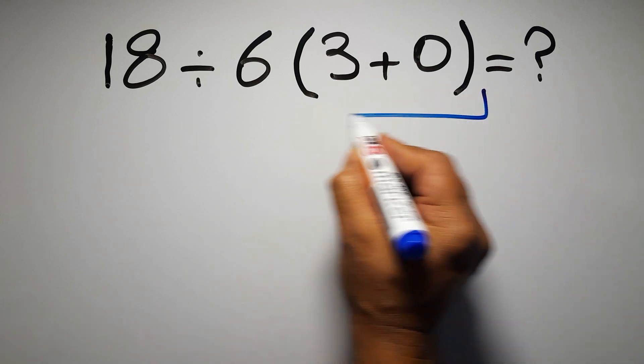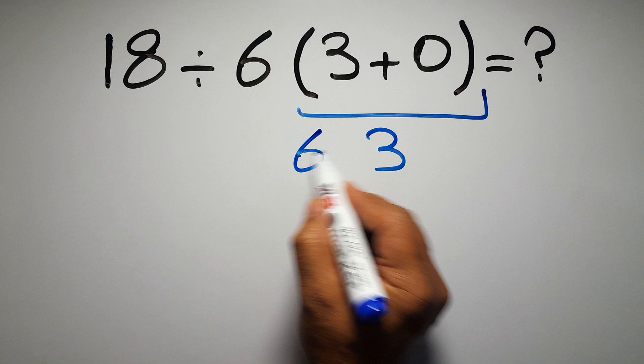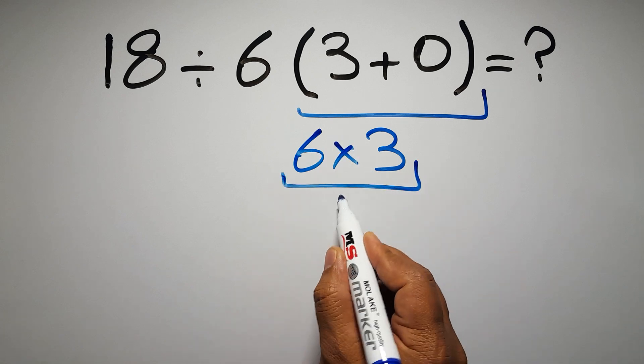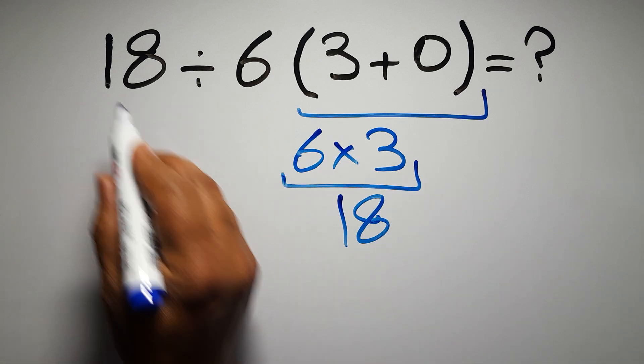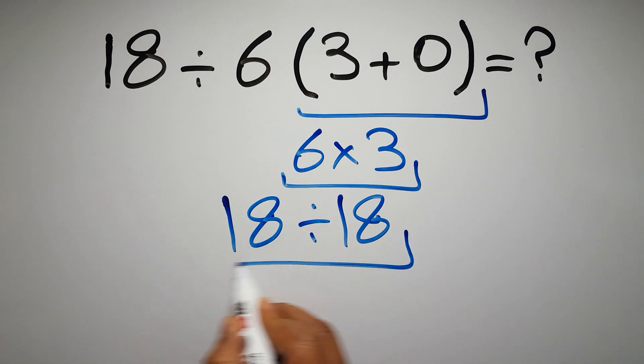3 plus 0 gives us 3, and 6 times 3 equals 18, so 18 divided by 18 is just 1.